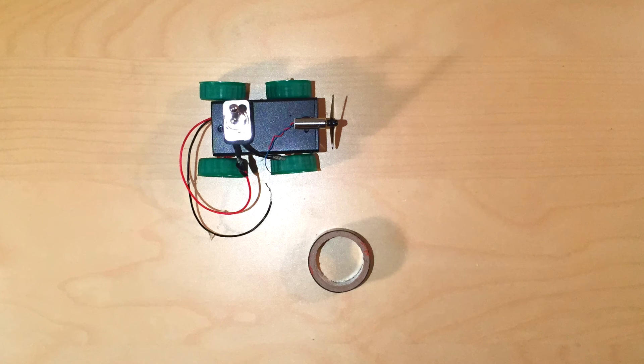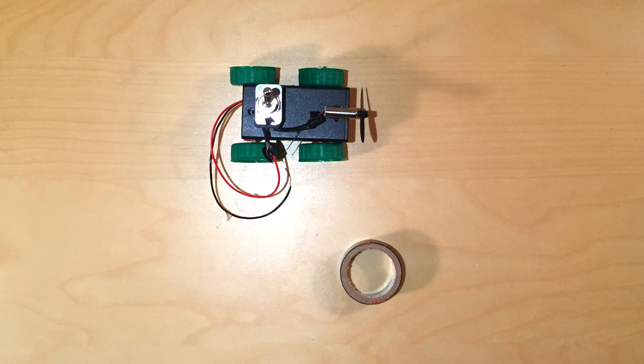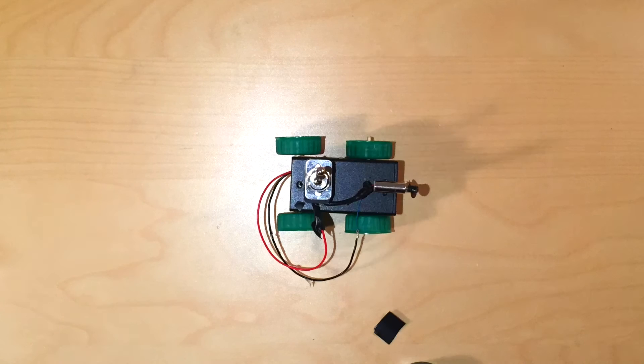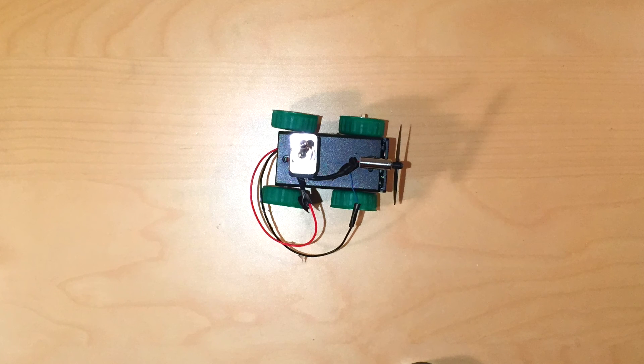Connect the red wire from the battery pack to a wire on the toggle switch. Then connect a wire from the DC motor to the other lead on the switch. After connecting the motor and the switch, join the other wire from the DC motor and the black wire from the battery pack.